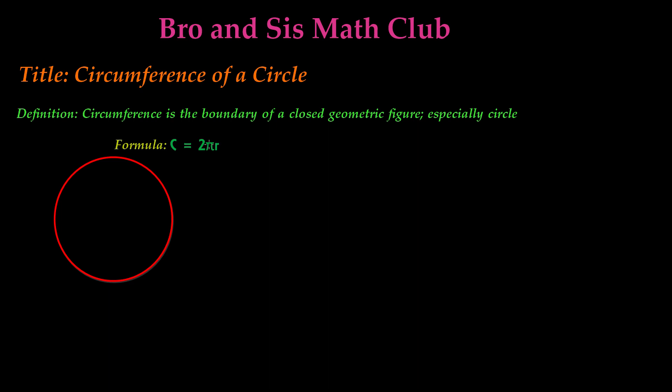So first we need to find the values of pi and r. Pi is always approximately equal to, so this is the sign for approximate. So pi is approximately equal to 3.14 in value.